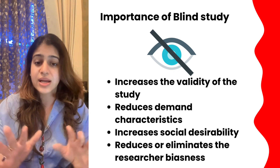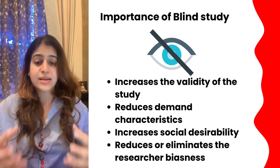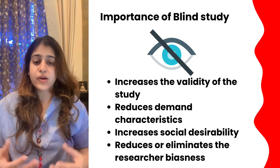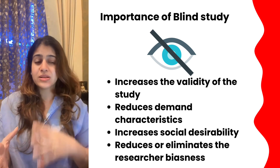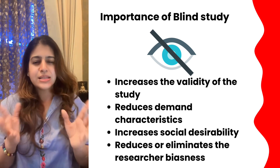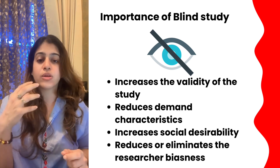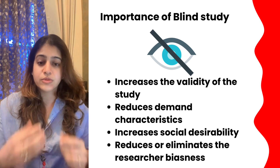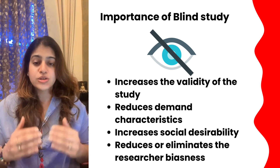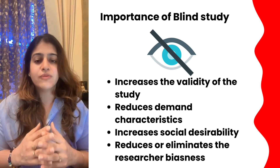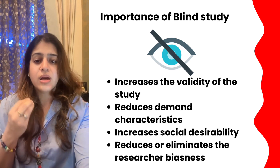The third reason is researcher bias — the researcher may be biased while dealing with participants, knowing which is experimental and which is control, and start perceiving them differently. To control researcher bias, and even the data analyst's bias during analysis, double and triple blind studies are used. It is all done to increase the validity of the study and ensure the results are true.